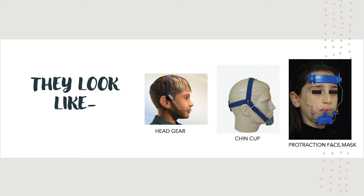So they can look like a headgear — see the first picture from the left. These are all varieties of orthopedic appliances. As I mentioned, they derive their anchorage units from extra-oral structures — structures outside the mouth — such as the forehead, the chin, and the back of the head, which all form the anchorage units.